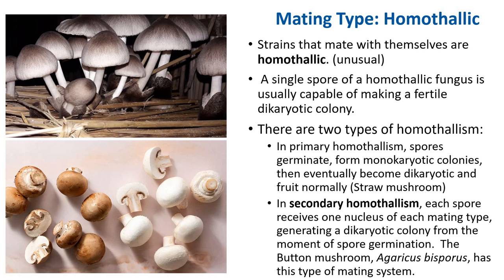Strains that mate with themselves are homothallic. A single spore of a homothallic fungus is usually capable of making a fertile dikaryotic colony. There are two types of homothallism: primary and secondary. In primary homothallism, spores germinate and form monocaryotic colonies that eventually become dikaryotic and fruit normally — for example, the straw mushroom we will look at later today. In secondary homothallism, each spore receives one nucleus of each mating type, generating a dikaryotic colony from the moment the spore germinates — the button mushroom has this type of mating system.